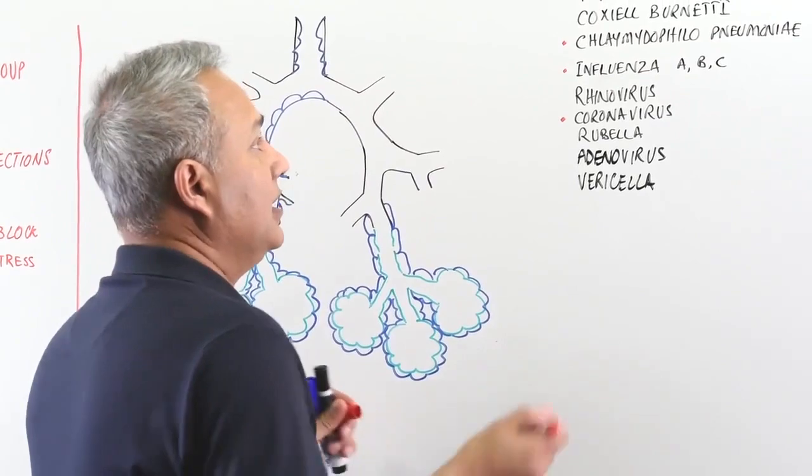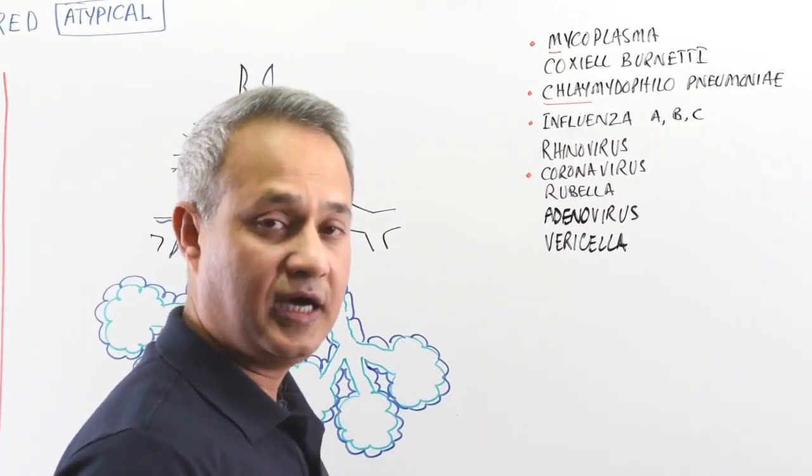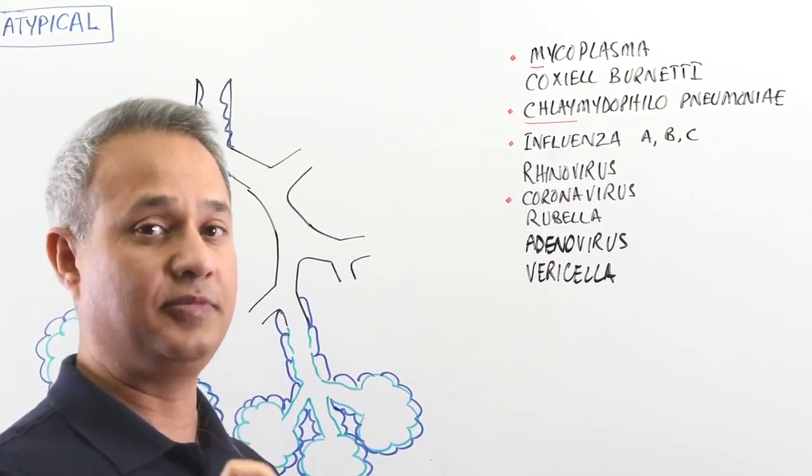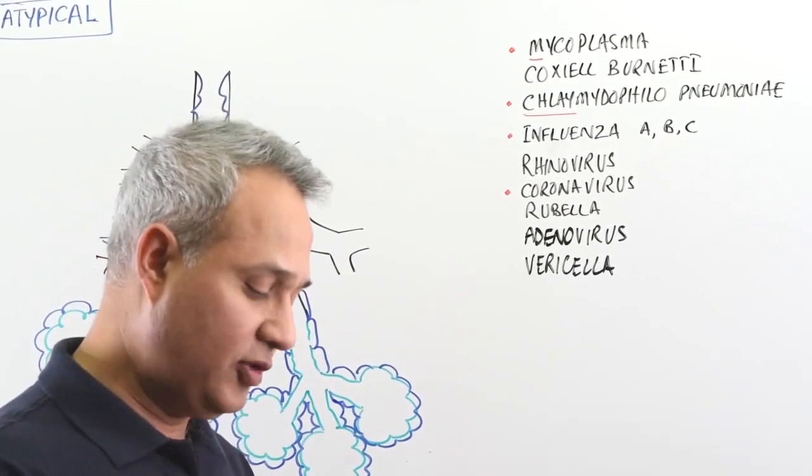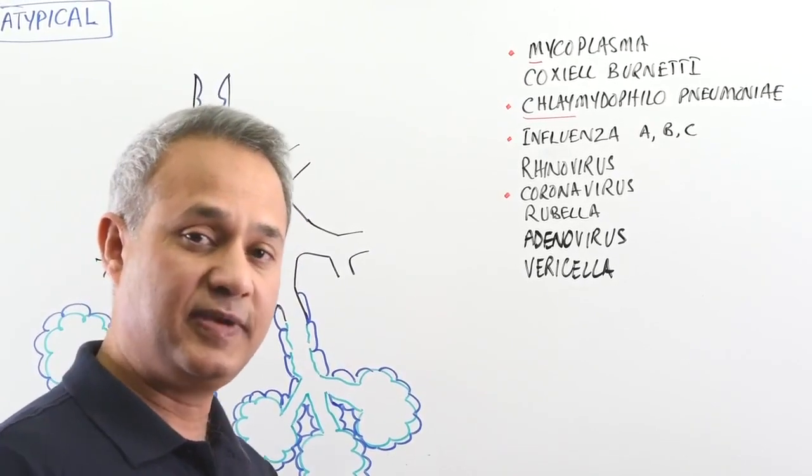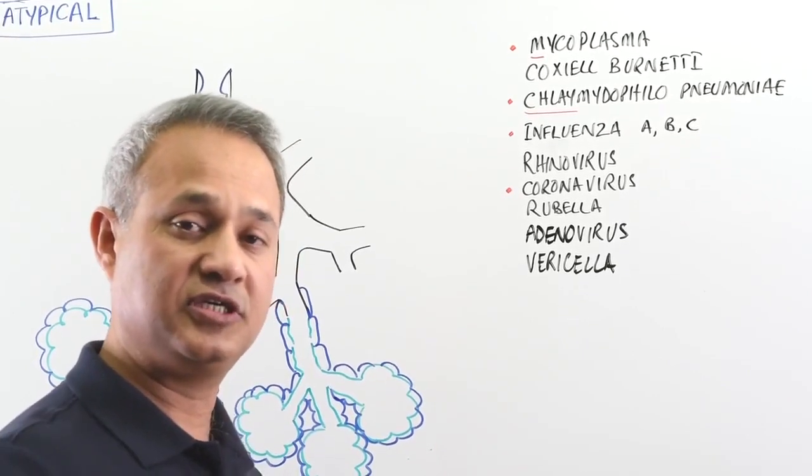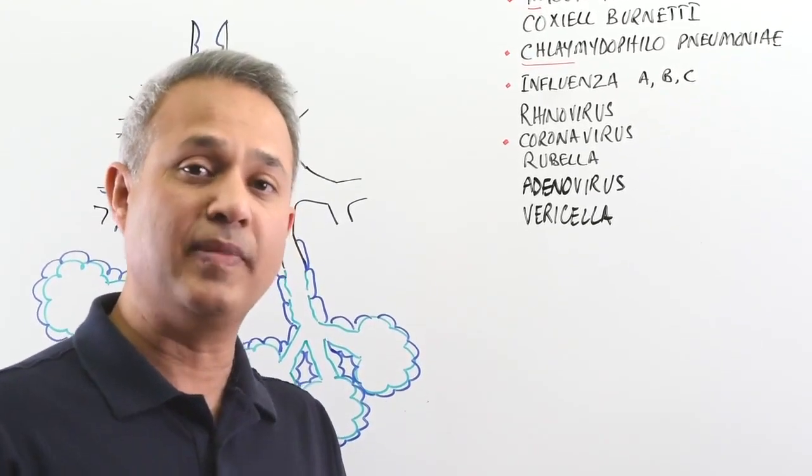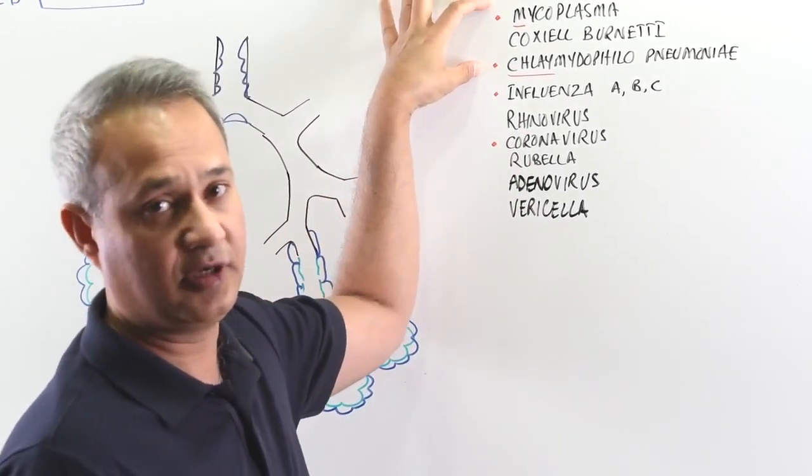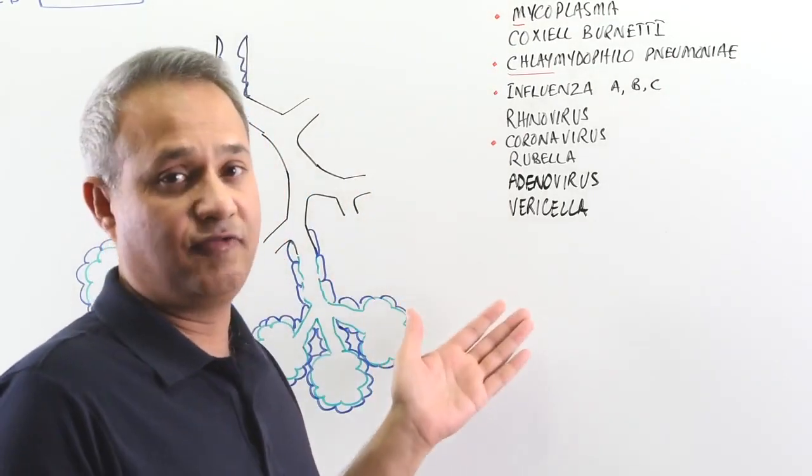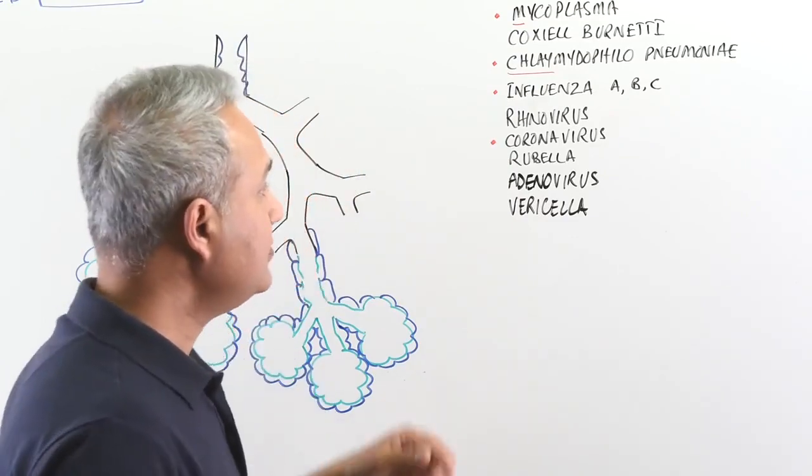Now, remember this: mycoplasma and chlamydophila pneumoniae are both treatable causes of atypical pneumonia. This is why if you have a patient who you suspect has atypical pneumonia and you have to quickly take care of the patient, patient is going in distress, then you at least start with macrolides because macrolides would treat both of these treatable causes of atypical pneumonia. If there is anything else, these are viruses, you cannot really do much about that although nowadays you can give antivirals as well.